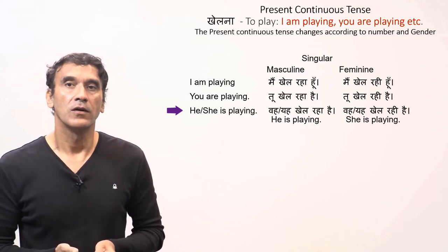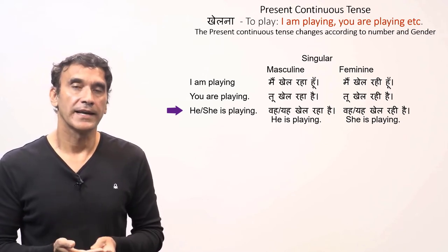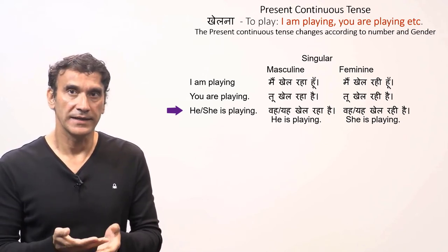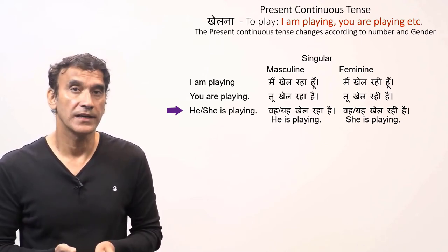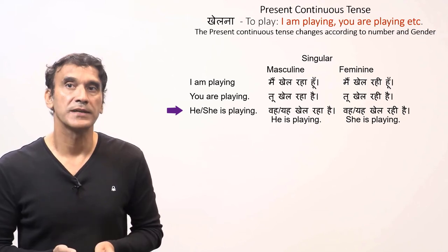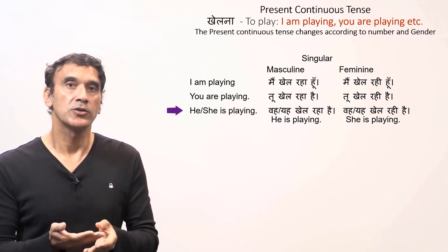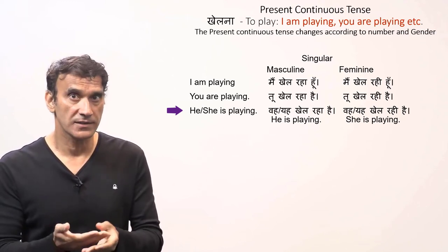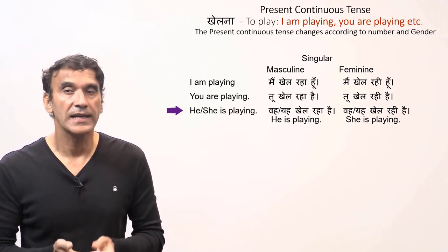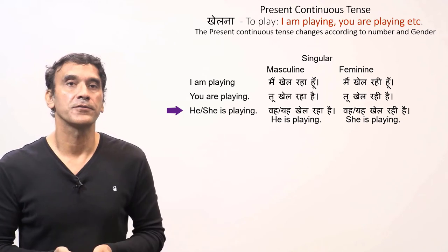For the third person singular: 'woh' or 'yeh khel raha hai' — he is playing; and 'woh' or 'yeh khel rahi hai' — she is playing. Here you can see that the present continuous tense is gender-sensitive, with different forms for the masculine and feminine genders.